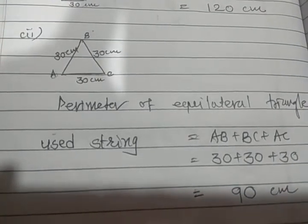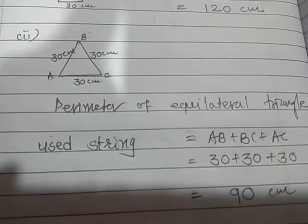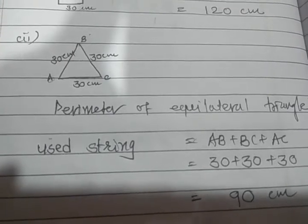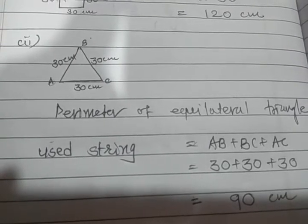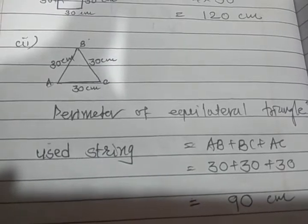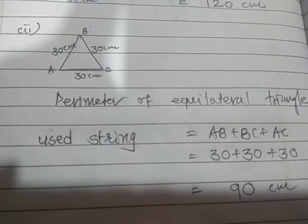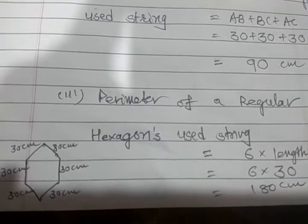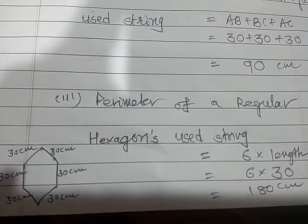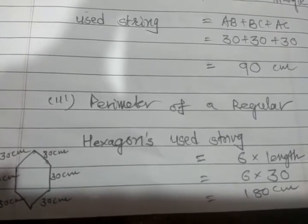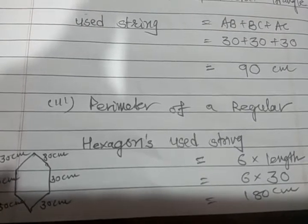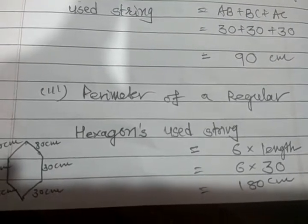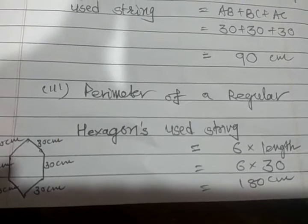For the equilateral triangle, perimeter means sum of the boundaries: AB plus BC plus AC. Since it is equilateral, we write 3 into length, so 30 plus 30 plus 30 equals 90 centimeters. Third, for the regular hexagon: regular means all sides are equal, and hexagon means 6 sides, so perimeter equals 6 multiplied by 30.